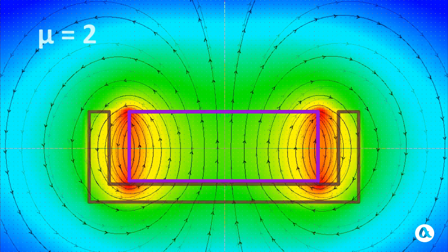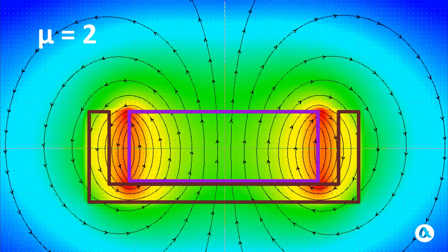And now let's add a shell with a magnetic permeability M that is currently equal to just 2. There were no significant changes, but let's start increasing M.